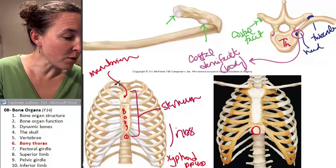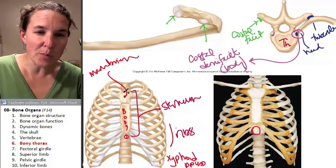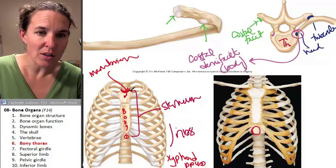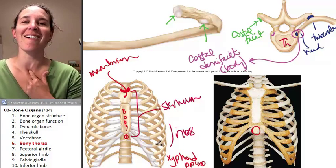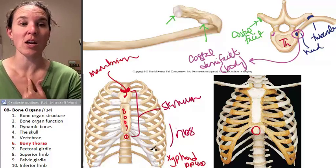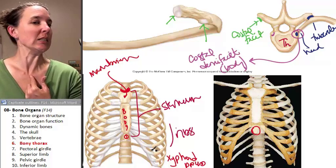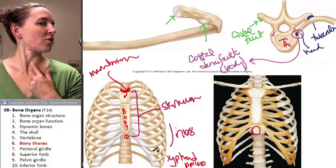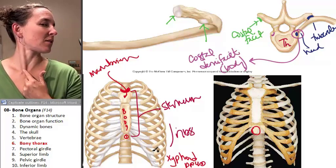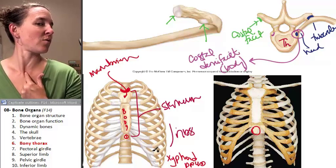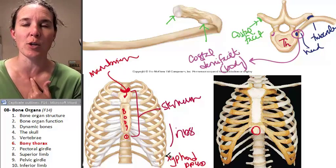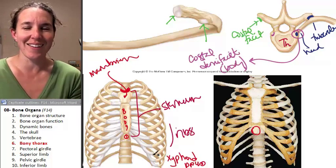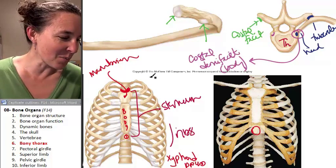On the manubrium is the suprasternal notch — that little notch right there, and you can feel it. The sternocleidomastoid muscle attaches next to your suprasternal notch of your manubrium of your sternum.